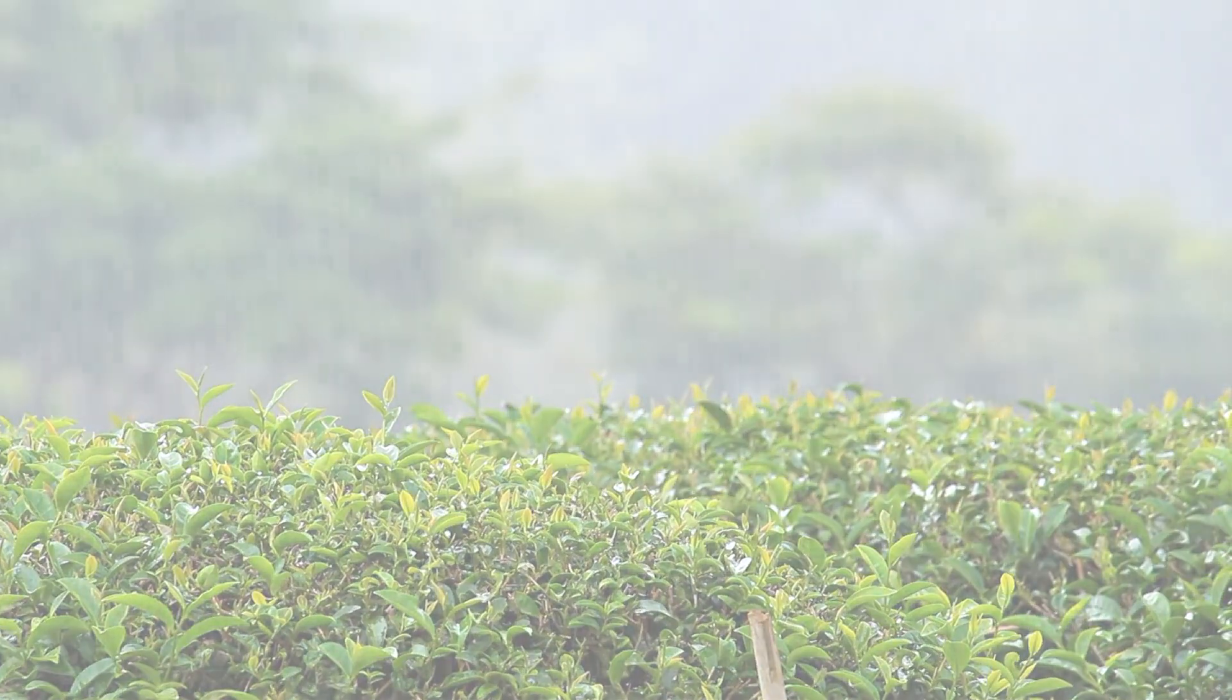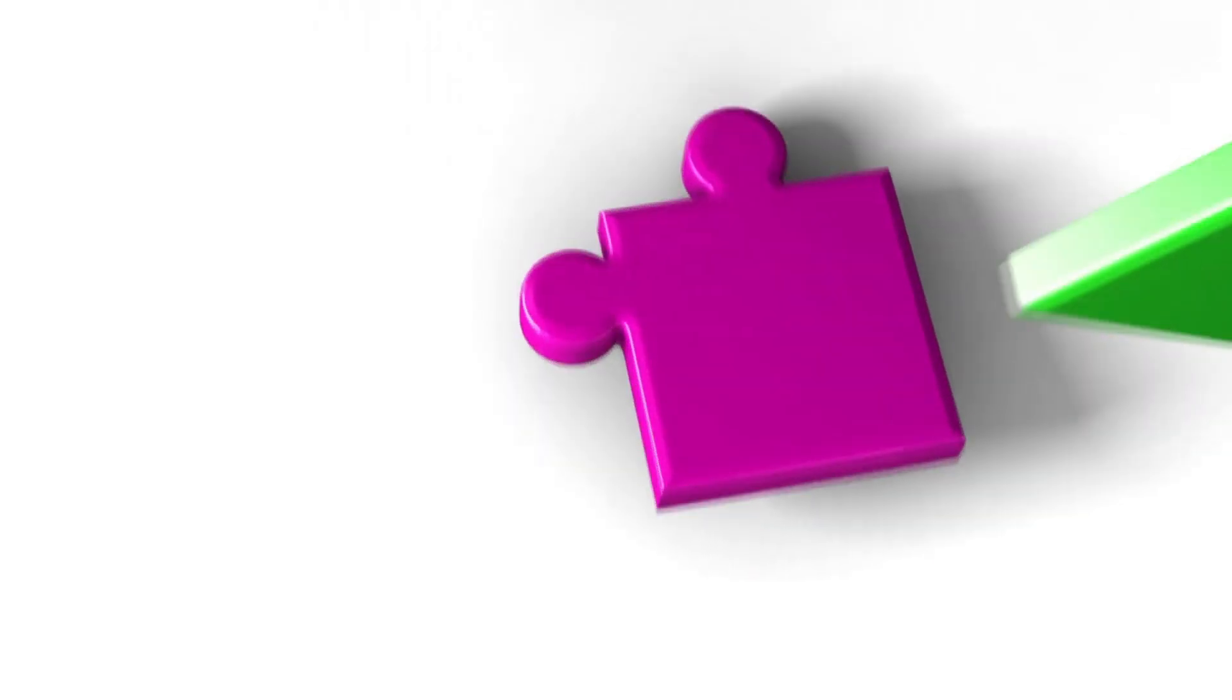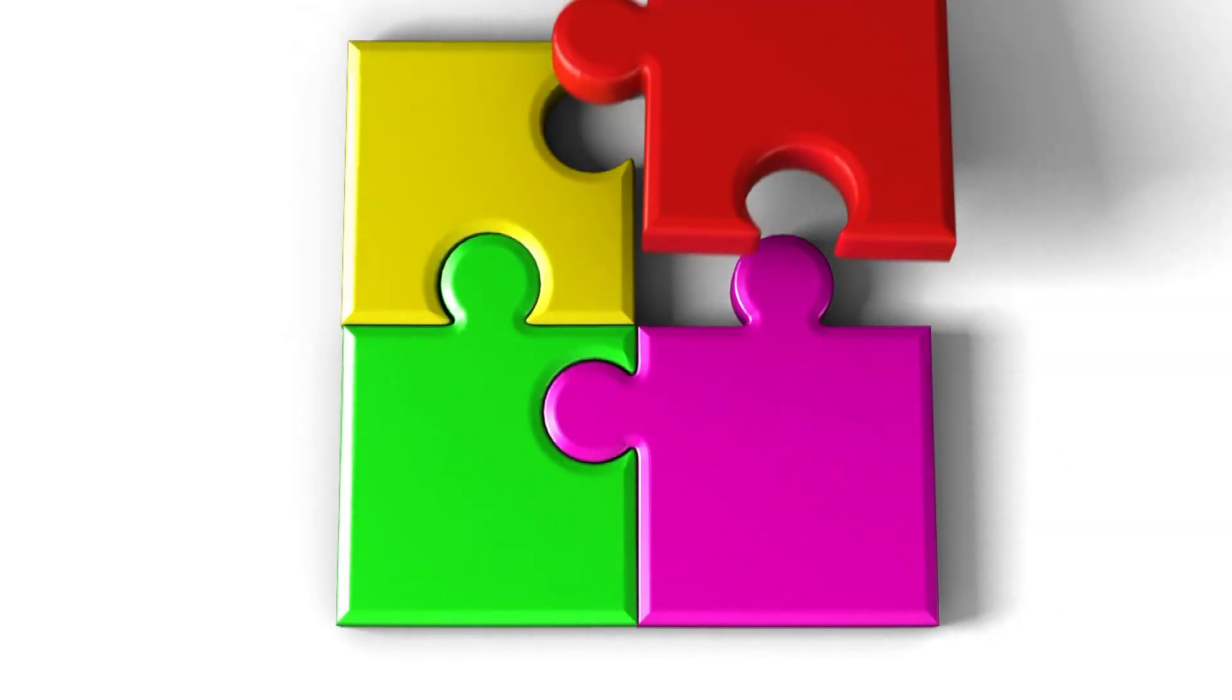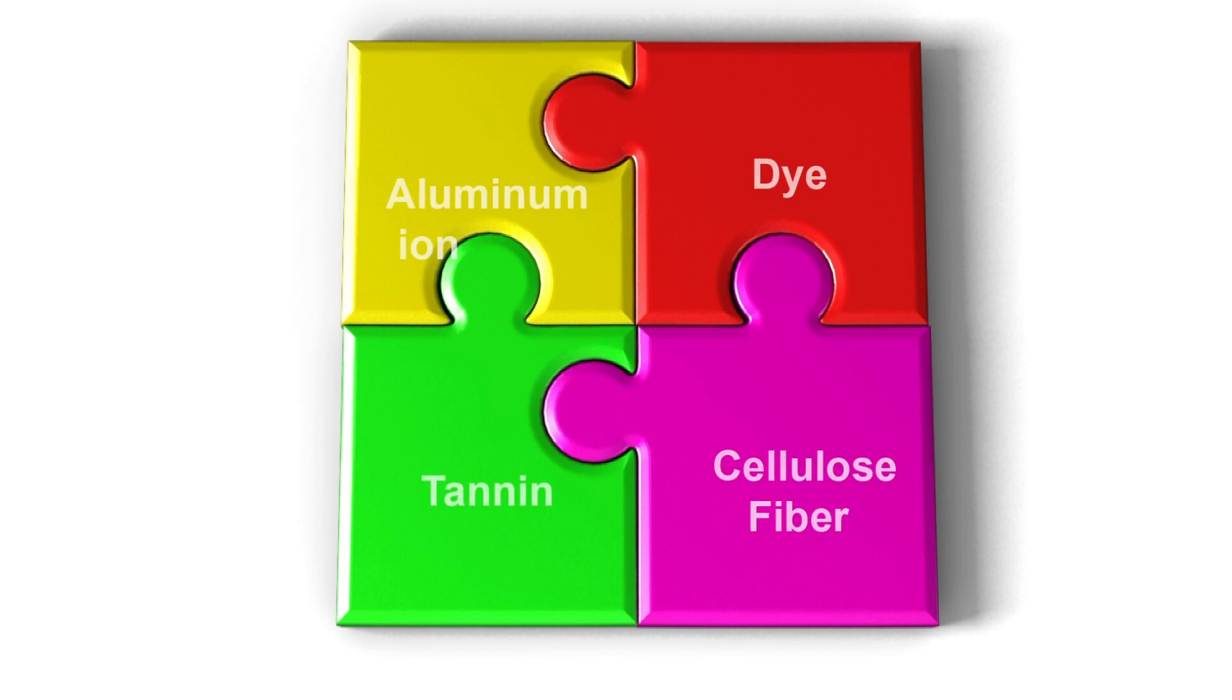Tannins may be the magic bullet. It is the missing link which can strongly bind colorants to fabric. For us, the ability of tannins to be a bridge between cellulose and colorants or protein and colorants is crucial.